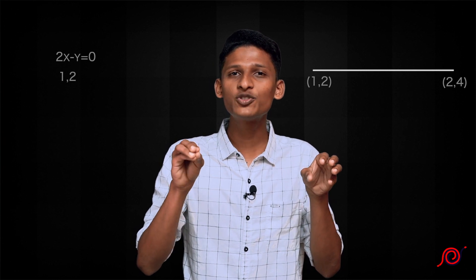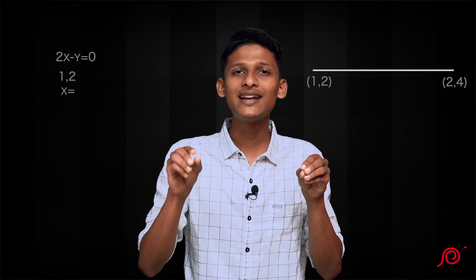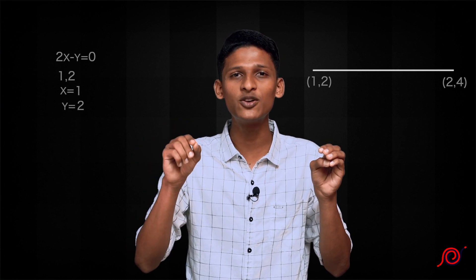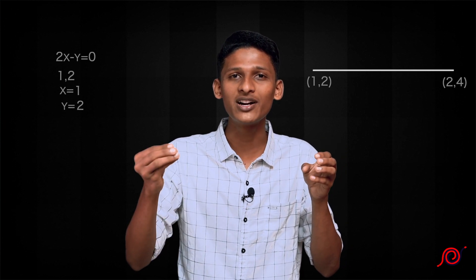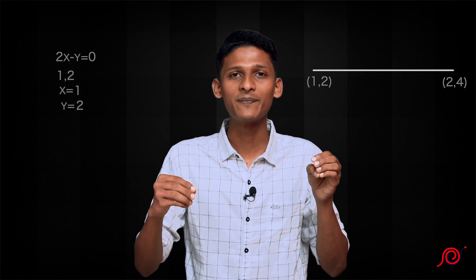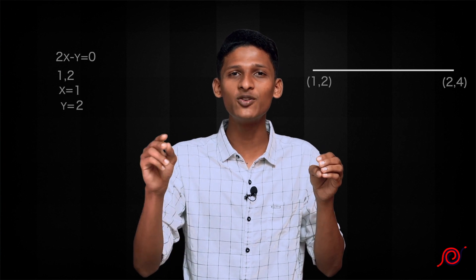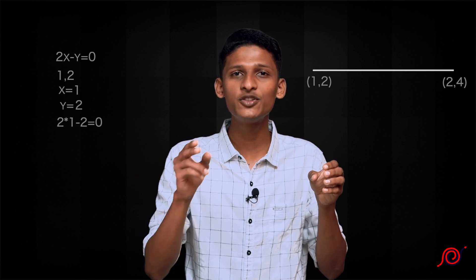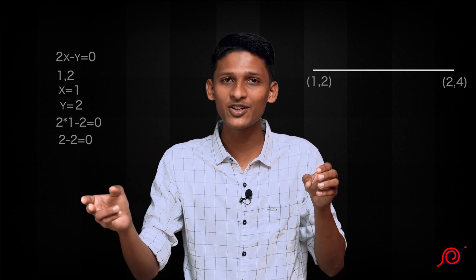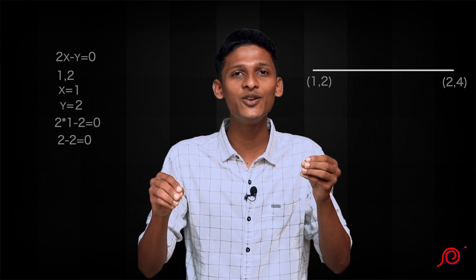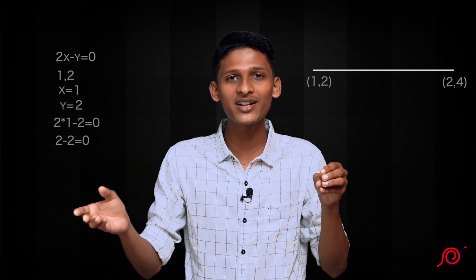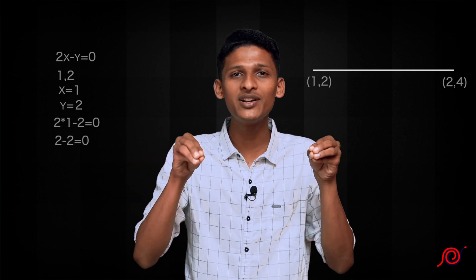So what is the first point? The first point is 1, 2. So for 1, 2: x equals 1 and y equals 2. We substitute into 2x - y = 0. We have x equals 1 and y equals 2. Then 2(1) - 2 = 0. That is the left side equaling 0. This equation is correct, satisfying this point.